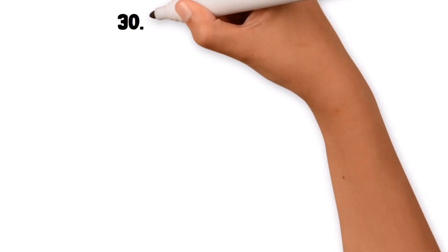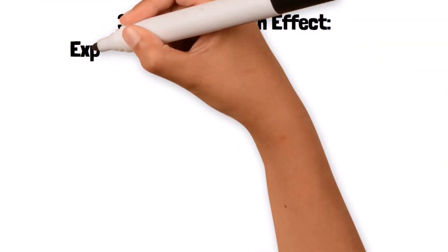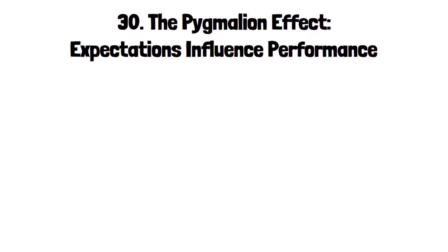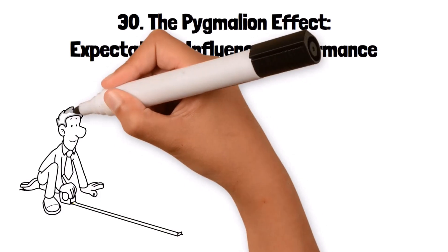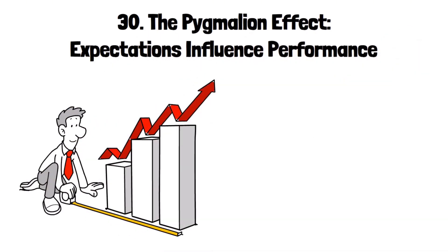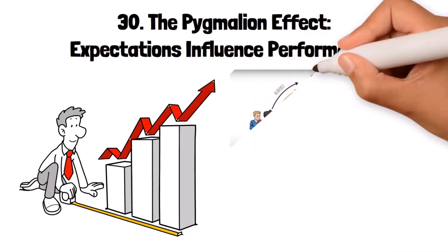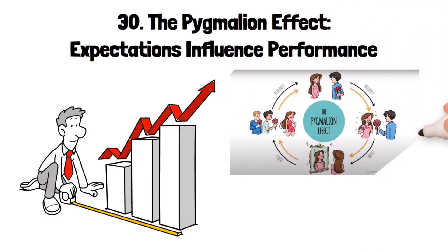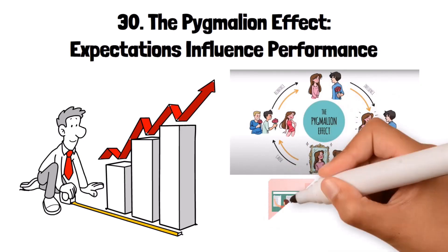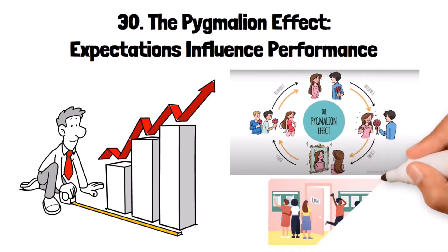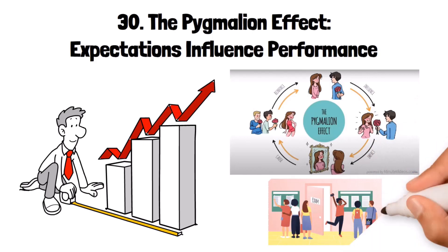30. The Pygmalion Effect: expectations influence performance. The Pygmalion effect is a psychological phenomenon where higher expectations lead to an increase in performance. If someone is expected to do well, they are more likely to meet those expectations due to positive reinforcement and belief in their abilities. For example, students who are expected to succeed by their teachers often perform better than those expected to fail, largely because expectations influence the support and encouragement they receive.